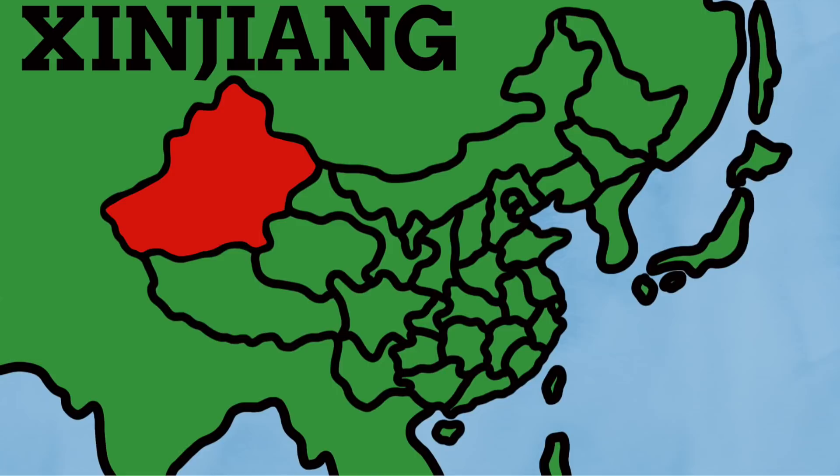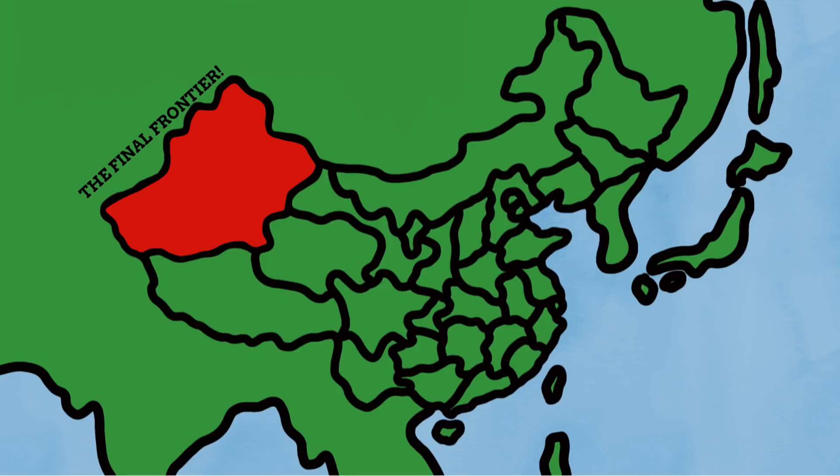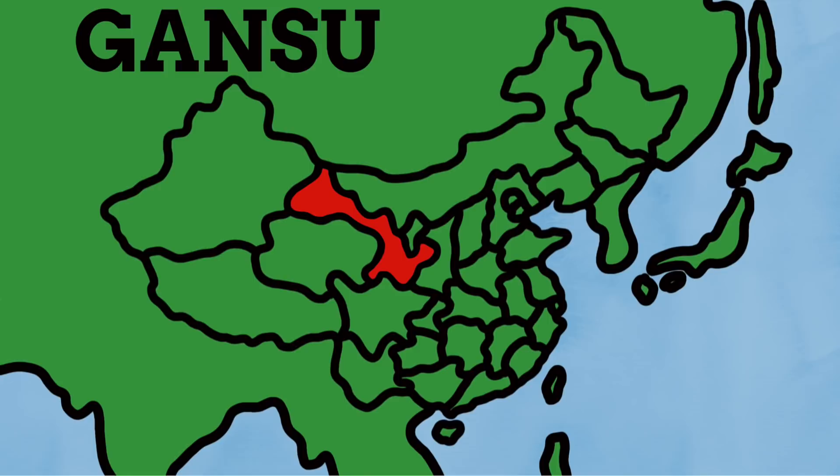Let's start with the northwest autonomous region of Xinjiang. This name means 'new frontier,' as it was the most recent area of land claimed by the Qing dynasty when it was claimed by them — so it was quite literally the land's newest frontier. Then we have the province of Gansu, whose name is actually a combination of names from the older regions that make up this province.